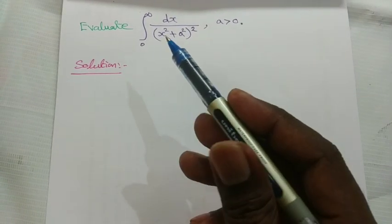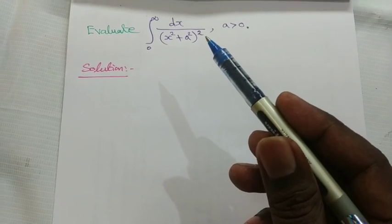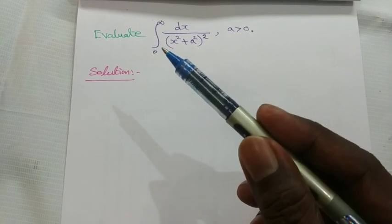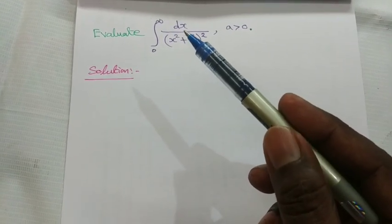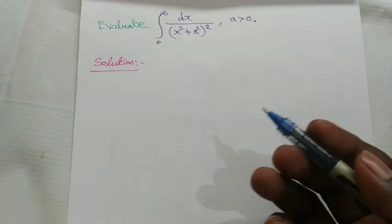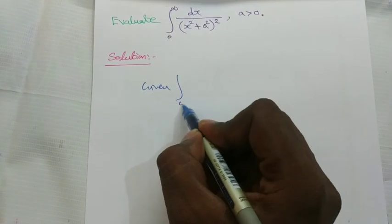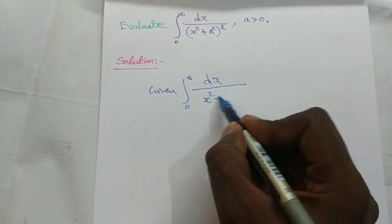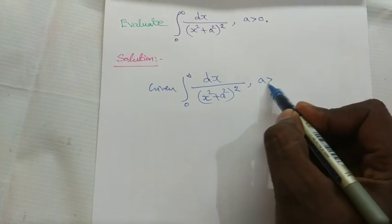Evaluate the integral from 0 to infinity of dx divided by (x² + a²)², where a is greater than 0. The given integral has limits 0 to infinity and is in the form p(x)/q(x). Therefore this is a contour integral of type 2.